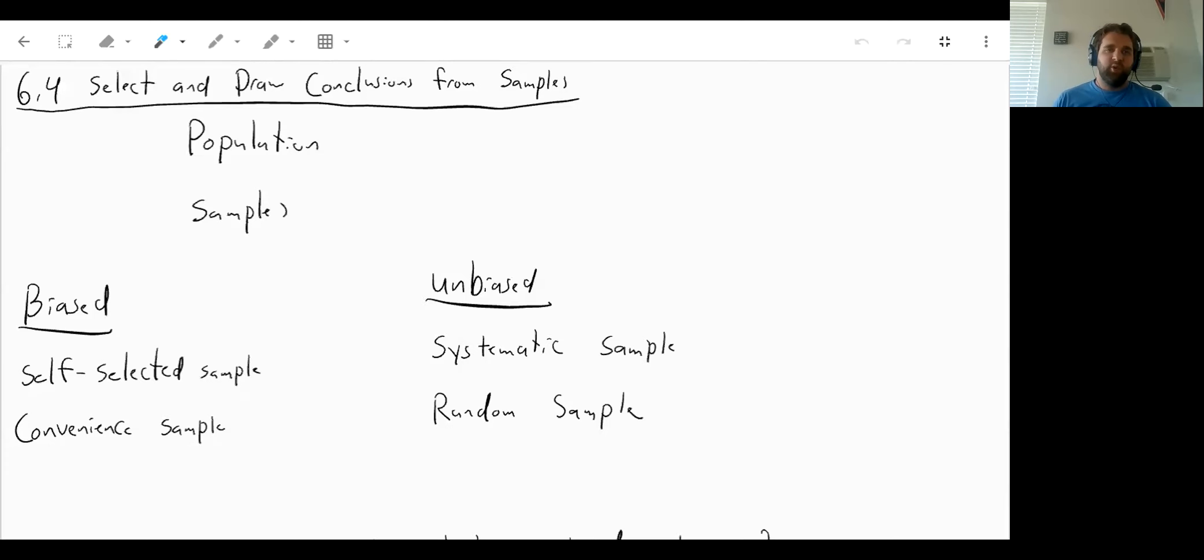Welcome to section 6.4, select and draw conclusions from samples. Two terms that we just need to become familiar with before this section. The first is the population. So a population is all of the people or animals or subjects within a specific group.